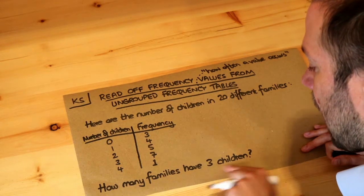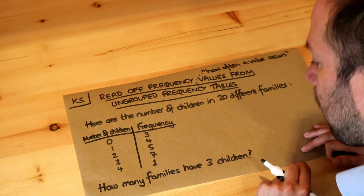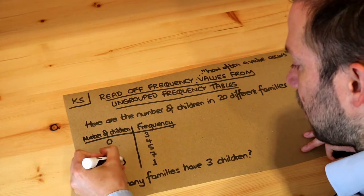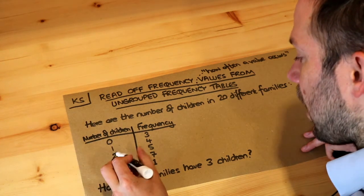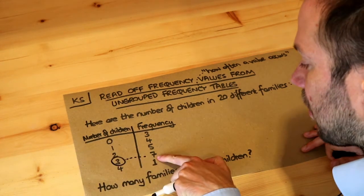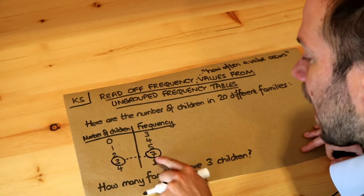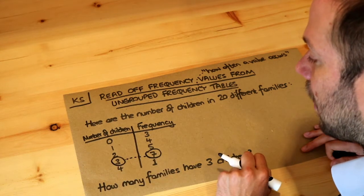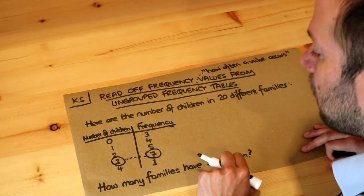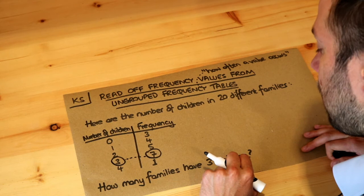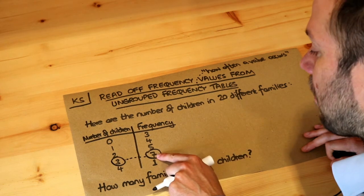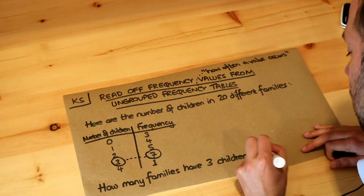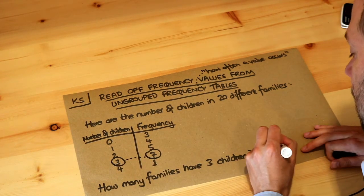So the question asks how many families have three children. Well, number of children — three children here — and this frequency here will tell us how many families have three children, how often that value of three occurs. Well it's seven; there are seven families with three children, so the answer is seven.